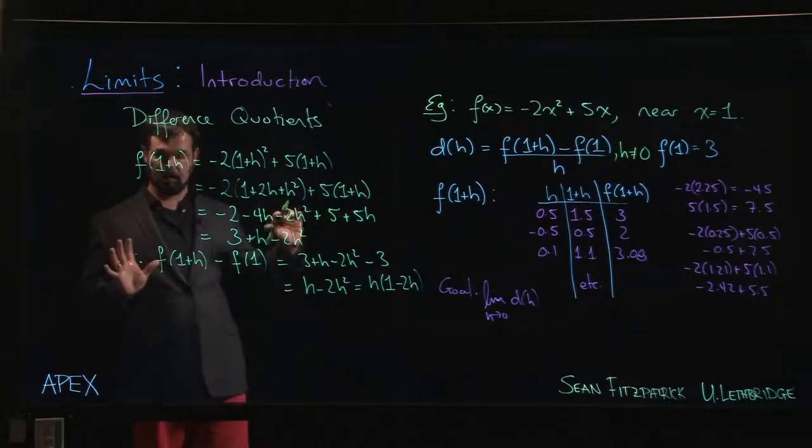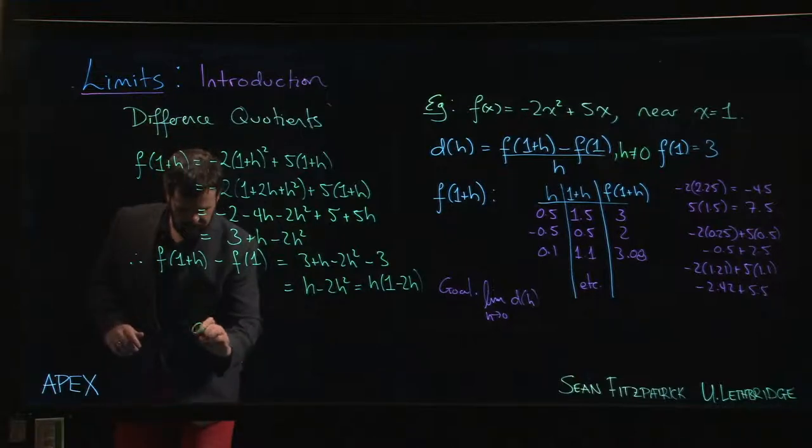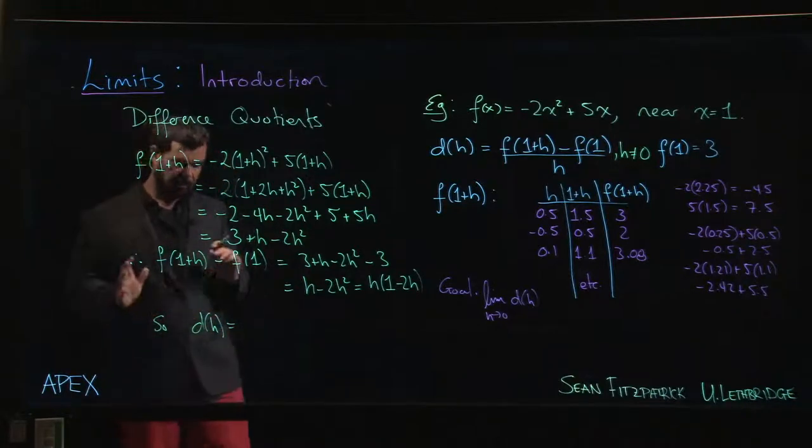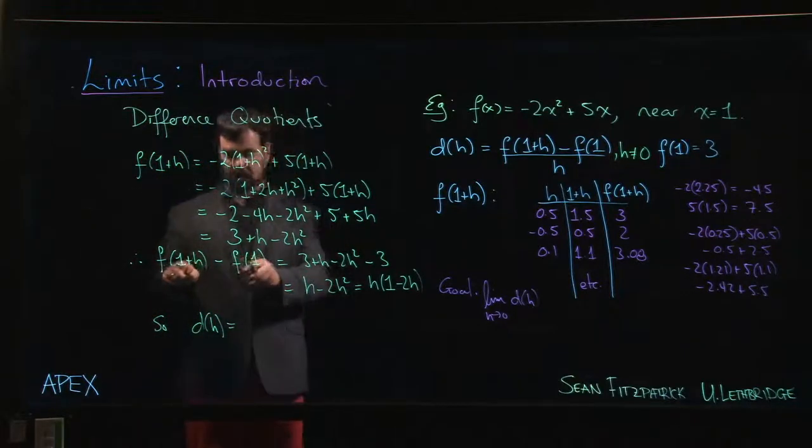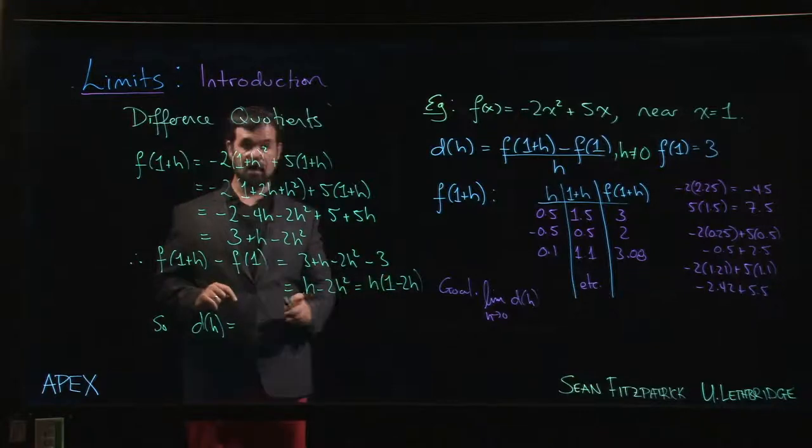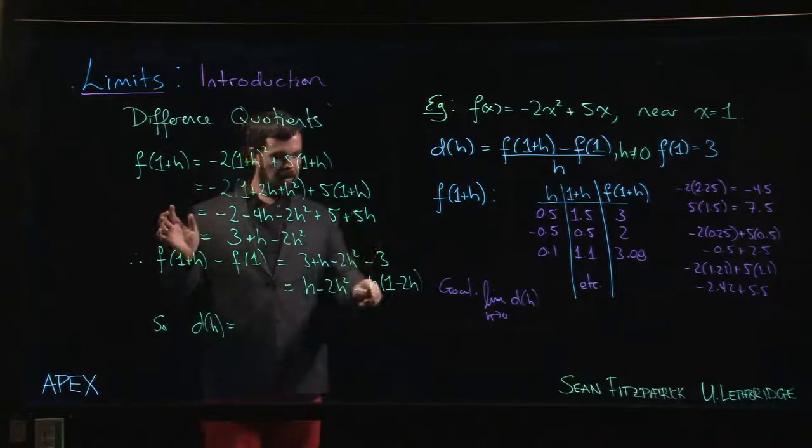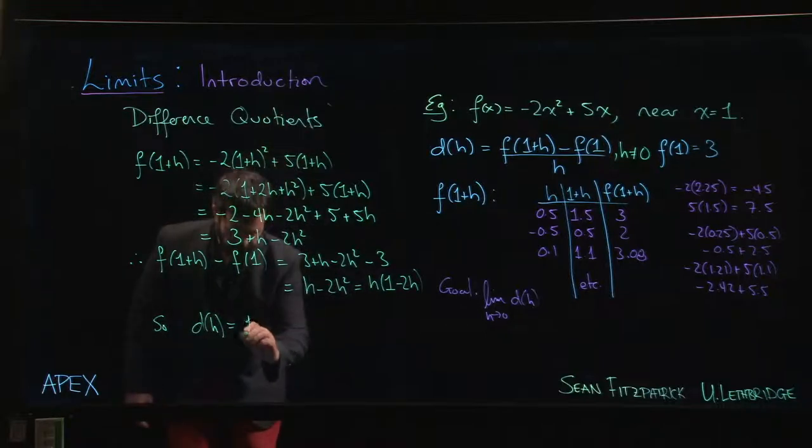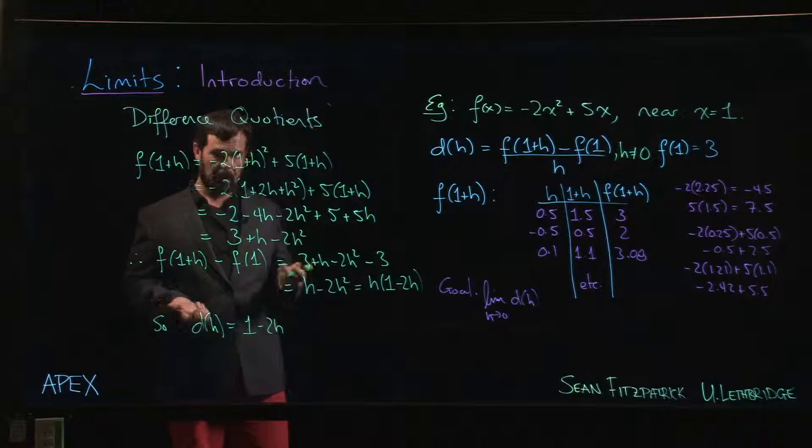So that means that to calculate this difference quotient as a function of H, I should take this difference in the numerator and just divide by H. But dividing by H is just going to cancel that H that I have there. It leaves me with 1 minus 2H.